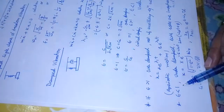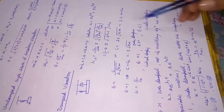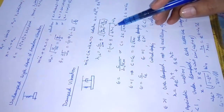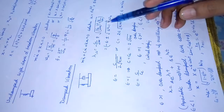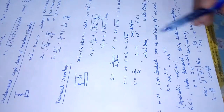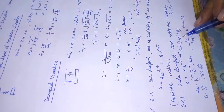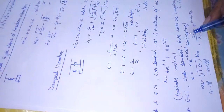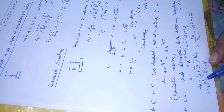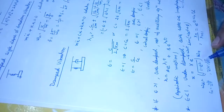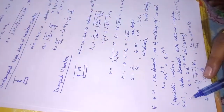The second case is when ε < 1, known as under-damped vibration. Both roots are imaginary because ε² < 1, making the term under the root negative. The general solution is x = Xe^(-εωₙt) · sin(ωd·t + φ), where ωd is the damped natural frequency given by ωd = √(1 - ε²) · ωₙ.